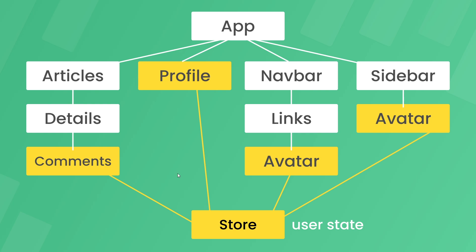Also on the store we define functions which can update or mutate the state, and we can call those functions from any component by reaching out directly to the store. When that happens the store mutates or updates the state, and then any component which uses that state will get the updated value. So in our case if the user logs out and the user state is changed to null, all of the components which use that state will get that updated user value of null.